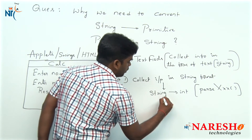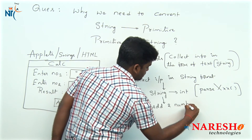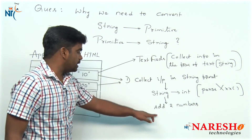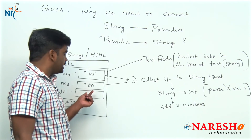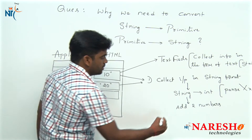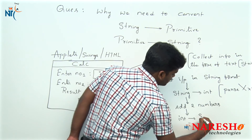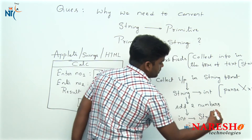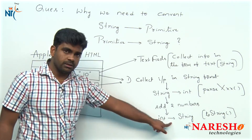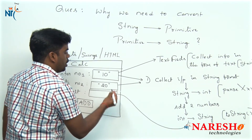After conversion, now perform the operation — just add the two numbers after conversion. Once the result is ready, we cannot directly store it into the text field, because a text field accepts only text. So, once again, after adding, a primitive to string conversion is important. Using the toString method we can convert it, and after conversion we set the result to the output field.